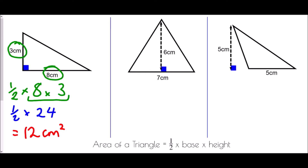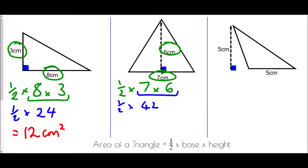The second triangle is an isosceles triangle, and again a right angle has been marked on it. We always need to deal with the perpendicular height — from the base at a right angle going straight up. So we have a half times the base of 7, times the perpendicular height of 6. 7 times 6 is 42, and a half of 42 is 21. The area is 21 centimetres squared.